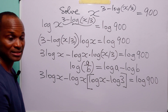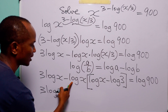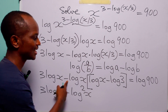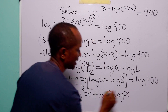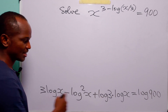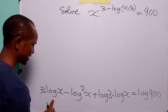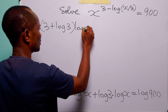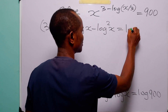Expanding this left hand side again, we still have 3 log x. Then minus log x times log x gives us minus log² x, and minus log x times (minus log 3) gives us plus log 3 multiplied by log x, equal to log 900. We can combine the 3 log x and the log 3 · log x terms to get (3 + log 3) multiplied by log x, minus log² x, equal to log 900.